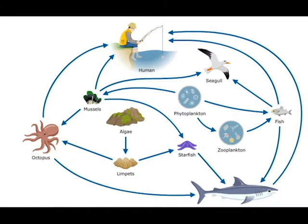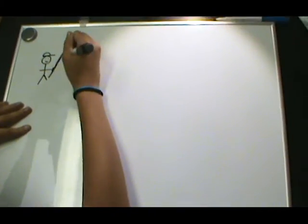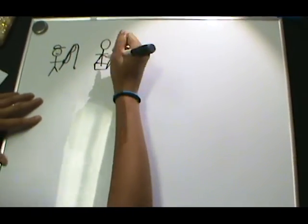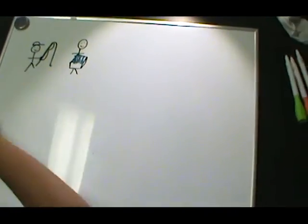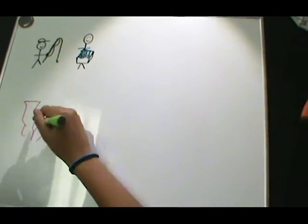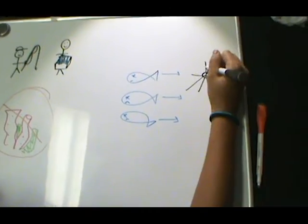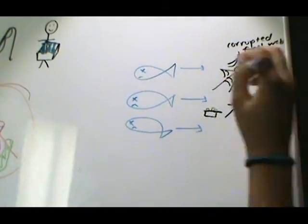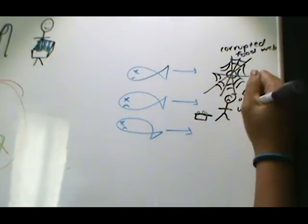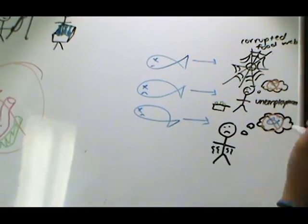Ocean acidification is greatly harming food webs, which can come back to harm humans. Millions of people rely on coastal jobs like commercial fisheries and shellfish industries. Ocean acidification prevents coral reefs from growing in certain areas, which affects tourism, food webs, food security, and biodiversity. If fish die due to ocean acidification, millions of people will lose their jobs, and millions of people relying on the oceans for food will be faced with starvation.